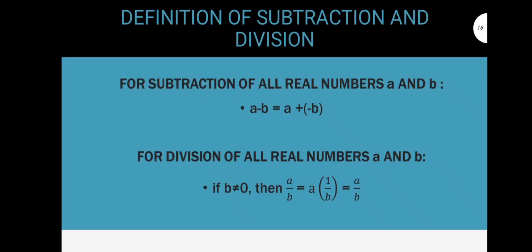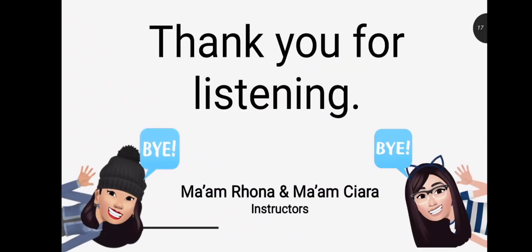We also have the definition of subtraction and division. For subtraction of all real numbers A and B, A minus B is equal to A plus negative B. And for the division of all real numbers A and B, if B is not equal to 0, then A over B is equal to A times 1 over B, which will be equal to A over B. And that's it for the properties of real numbers. Thank you guys for listening and we hope that you learned.